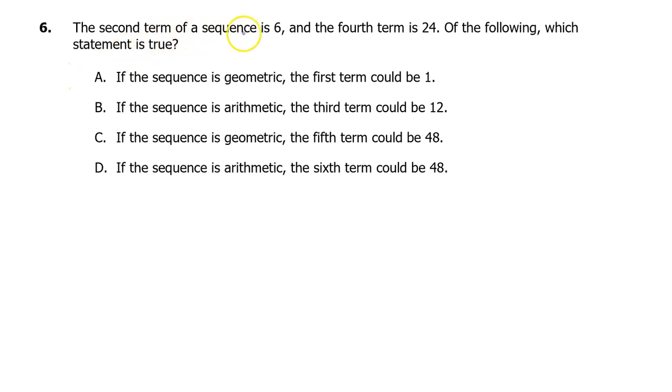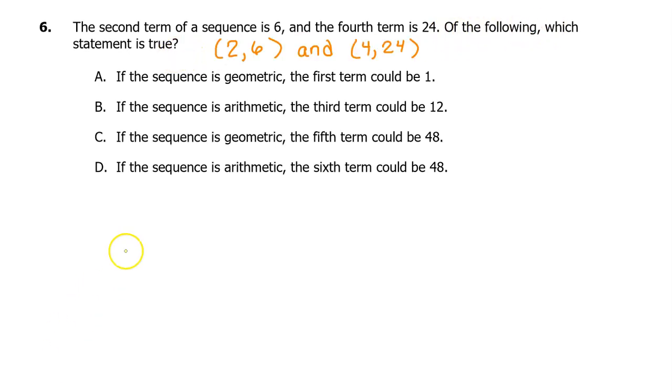Number 6. The second term of a sequence is 6. The fourth term is 24. Of the following, which statement is true? We have been given the input-output pairs (2, 6) and (4, 24). Let's check option A. If the sequence is geometric, it can be modeled by the equation G_n equals G_k times r to the (n minus k) power, where G_n is the nth term of the sequence and G_k is term k, and r is the common ratio. In this format, the input-output pair (2, 6) becomes G_2 equals 6. And the pair (4, 24) becomes G_4 equals 24. We can substitute these in for G_n and G_k in order to find the common ratio r.